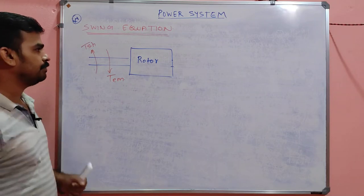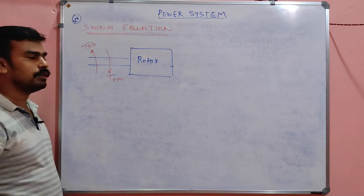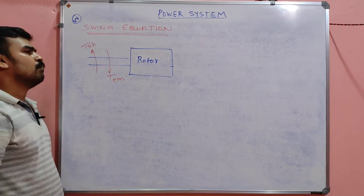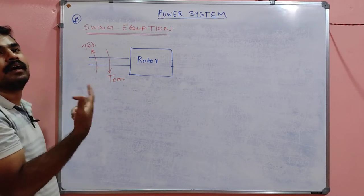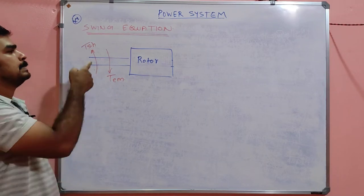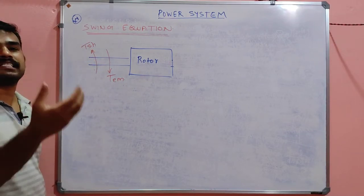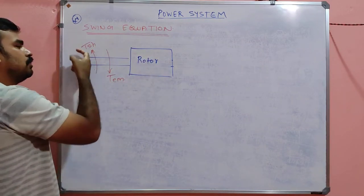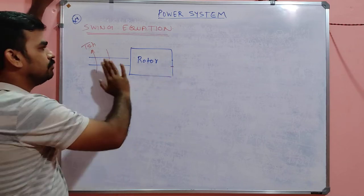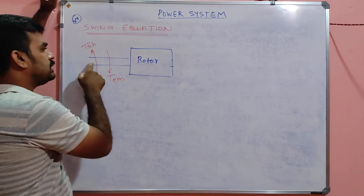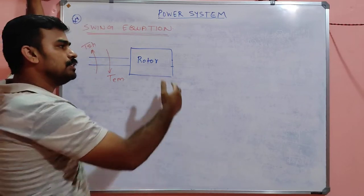Consider the alternator rotor — it is continuously delivering some power. What happens when we increase the speed of the shaft, or increase the shaft torque? The shaft torque is in the anti-clockwise direction; the machine is rotating in anti-clockwise direction. So the shaft torque is Tsh, and when the machine runs normally without any disturbance, the rotor rotates and produces some electrical power as output.